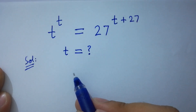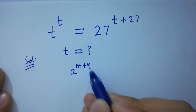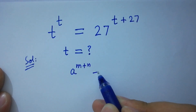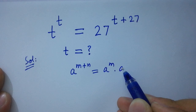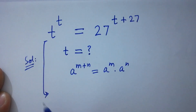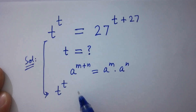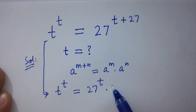As we know, a to the power m plus n equals a to the power m times a to the power n. Then it will be t to the power t equals 27 to the power t times 27 to the power 27.